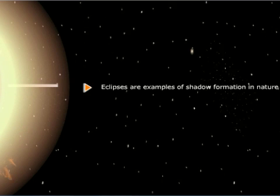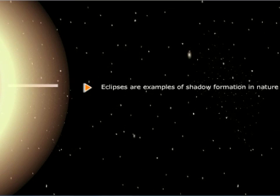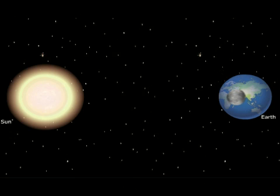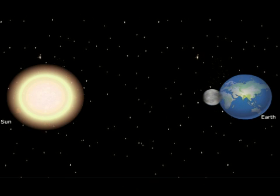You know that the Earth revolves around the Sun and the Moon revolves around the Earth. A solar eclipse occurs when the Moon comes in between the Sun and Earth.